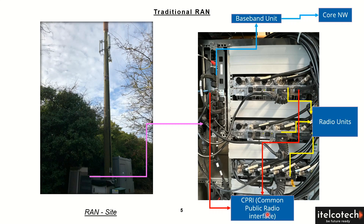These cables are known as CPRI cables — CPRI stands for Common Public Radio Interface, which is used to communicate between the radio module and the baseband unit. This is a standard developed so that there would be a common public interface between these devices, handling processing such as inverse Fourier transform, modulation, channel coding, or interleaving.